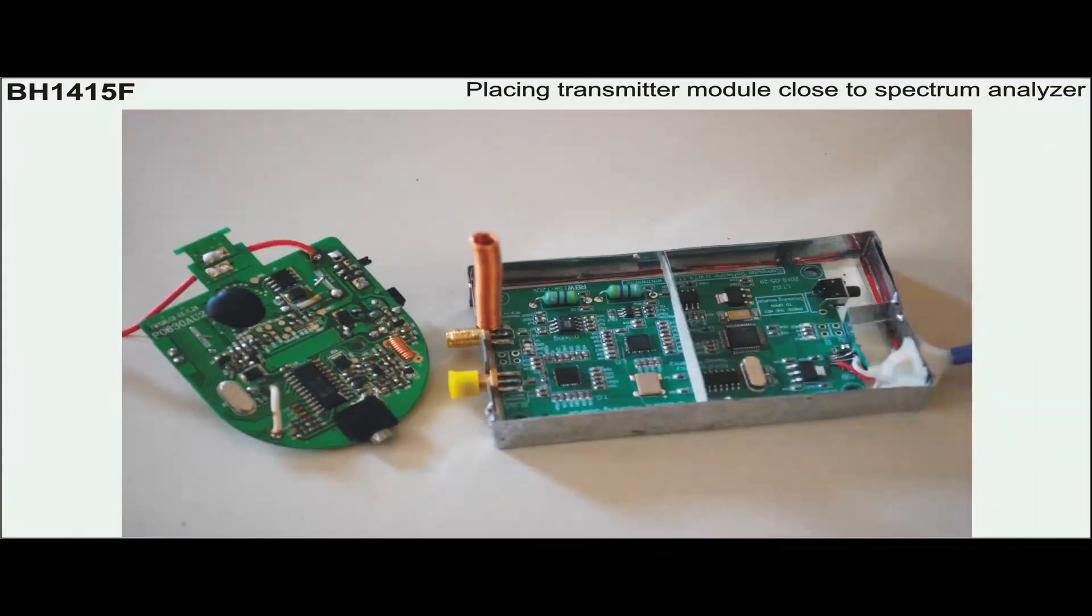First, 5-volt power is applied to the transmitter module just to see what kind of RF signal is outputted. No antenna is connected to the module during this measurement.